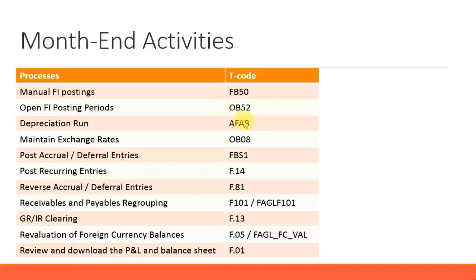You need to perform the depreciation run for all your assets. It is always advisable to run the depreciation run overnight, not during office hours — especially if you have a large number of assets, because it takes a lot of system memory. Overnight there are fewer users on the system, so the depreciation run can complete much faster. The depreciation run is always run as a background job.